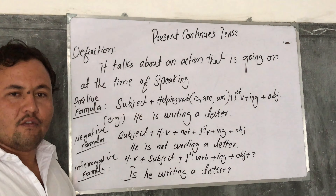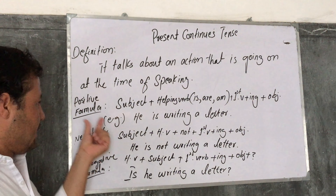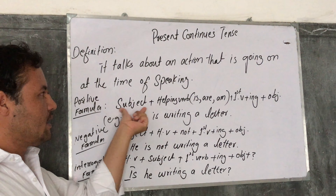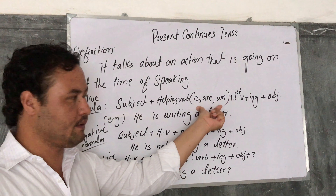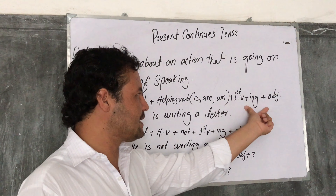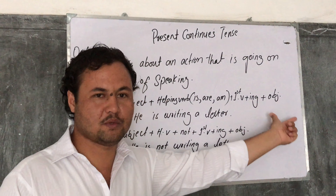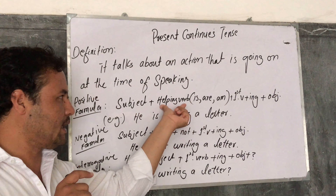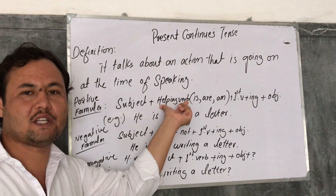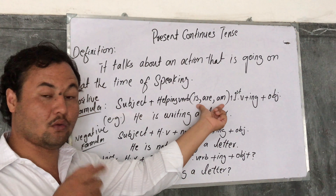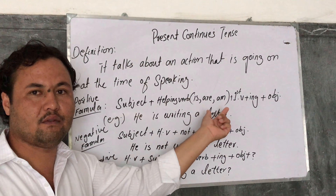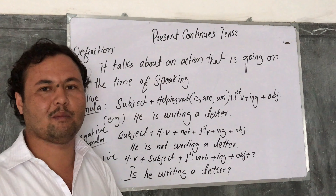So the formula for the positive sentence, as I have written over here: subject plus helping verb. Is, are, and am — they are called helping verb. First form of verb plus ING plus object. Let me give a little hint about helping verb. Helping verbs are those verbs which help the main verb to change the meaning of the sentence or the tense.